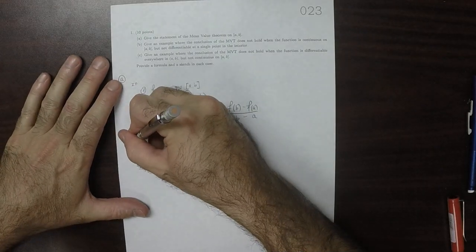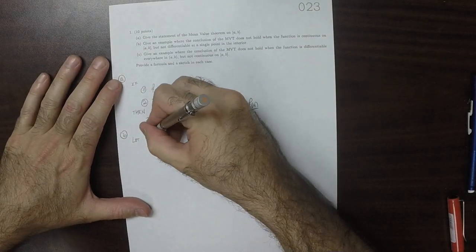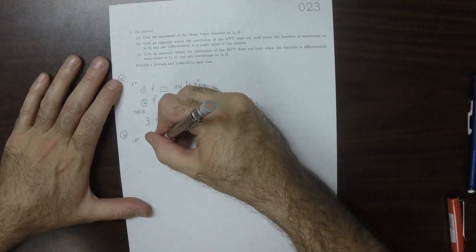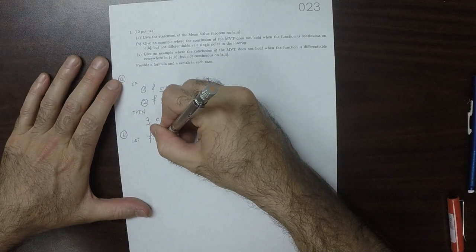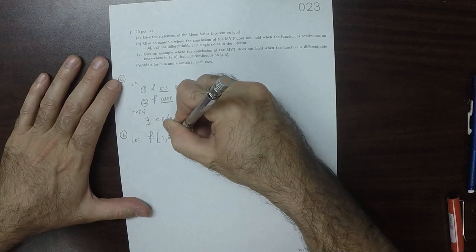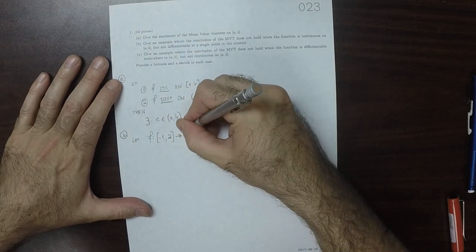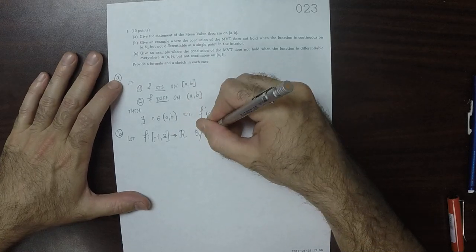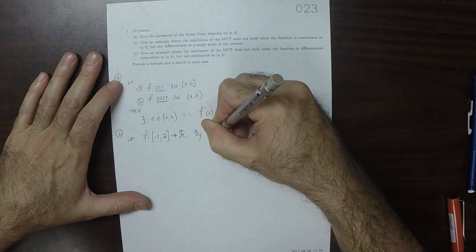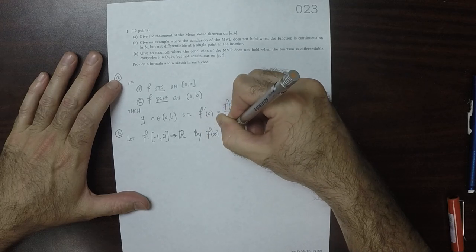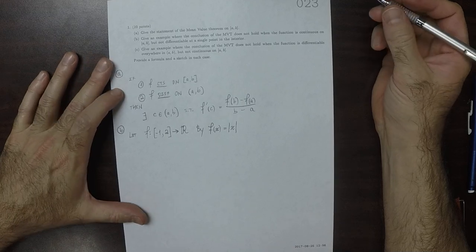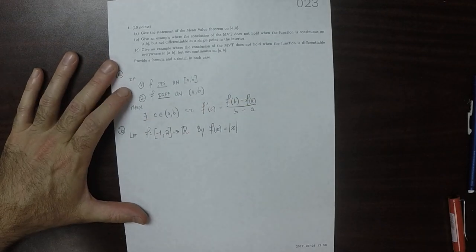OK, so I'll say let f from, say, negative 1 to 2 to the reals be given by f of x is the absolute value of x.